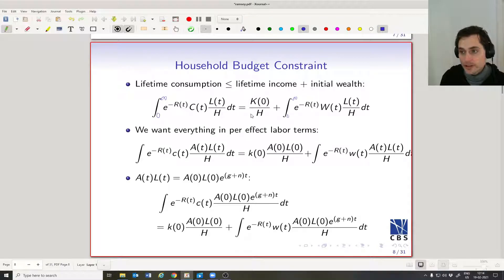Finally, the last term is our initial wealth or our initial savings, which is the total amount of capital in the economy at time zero divided by the number of households. So this is the household's budget constraint.